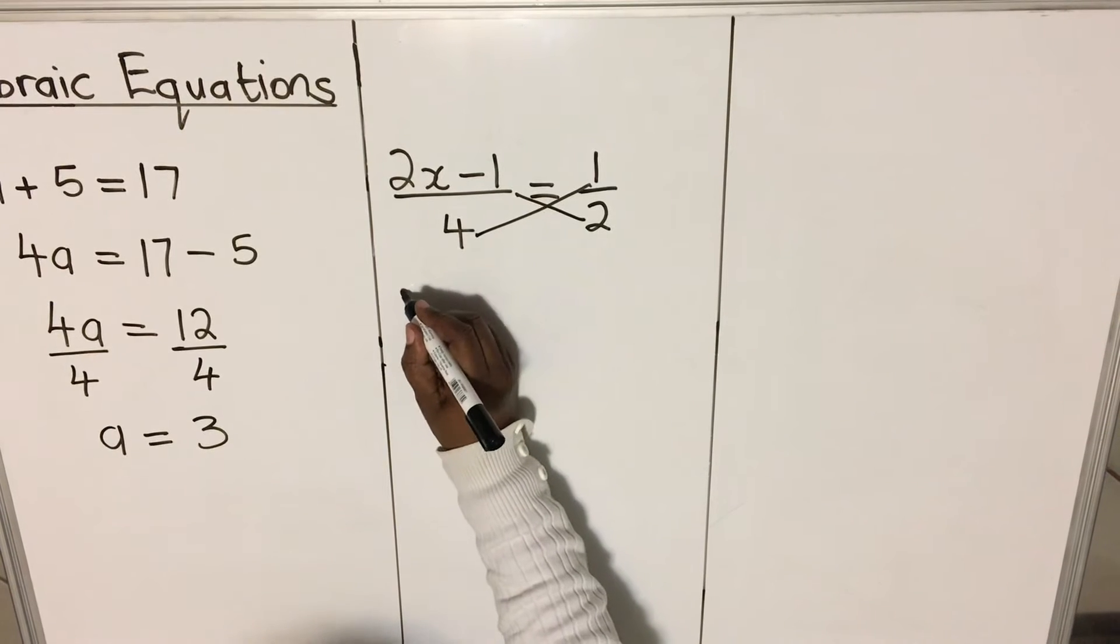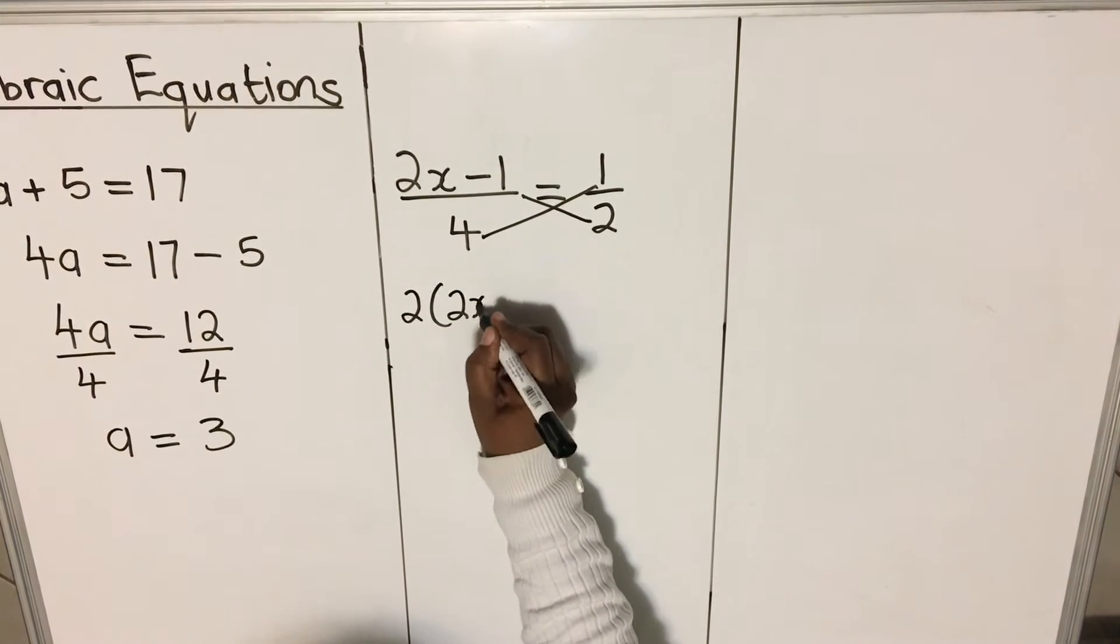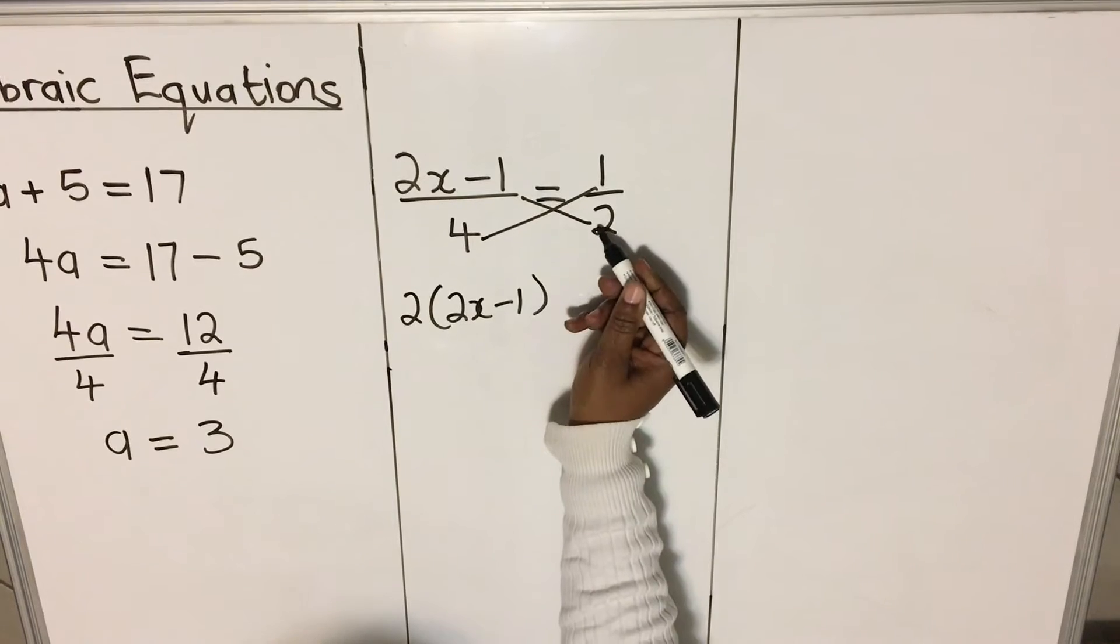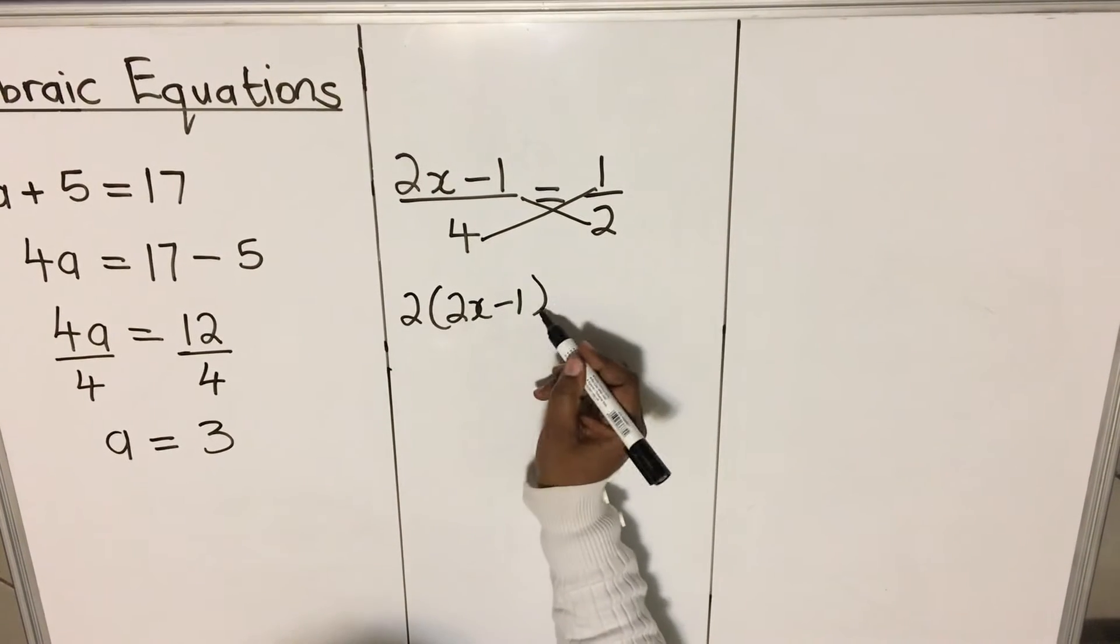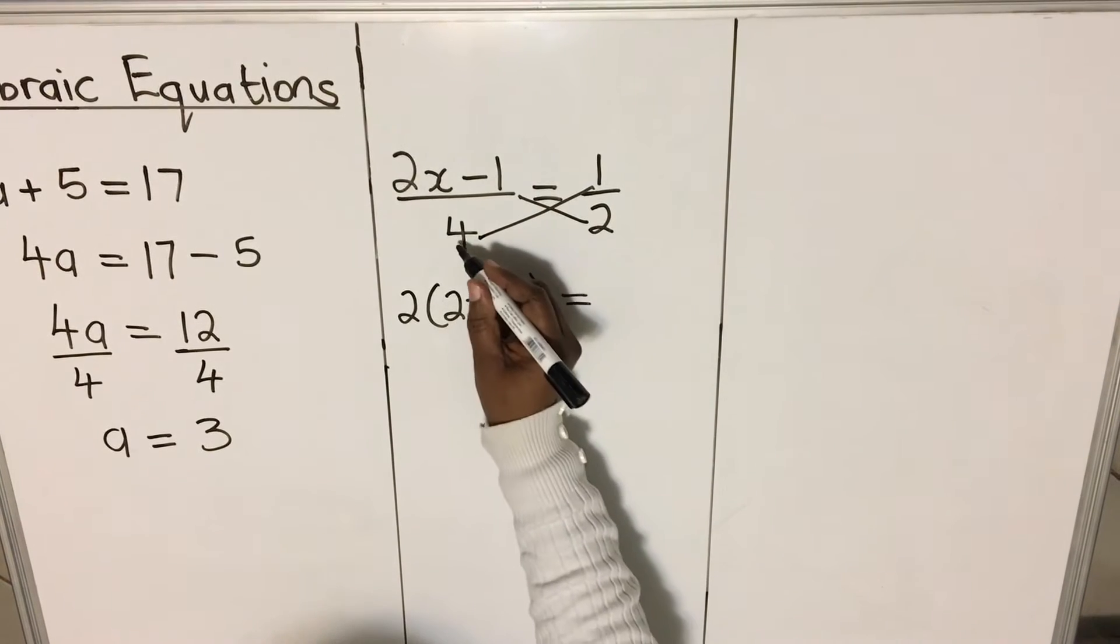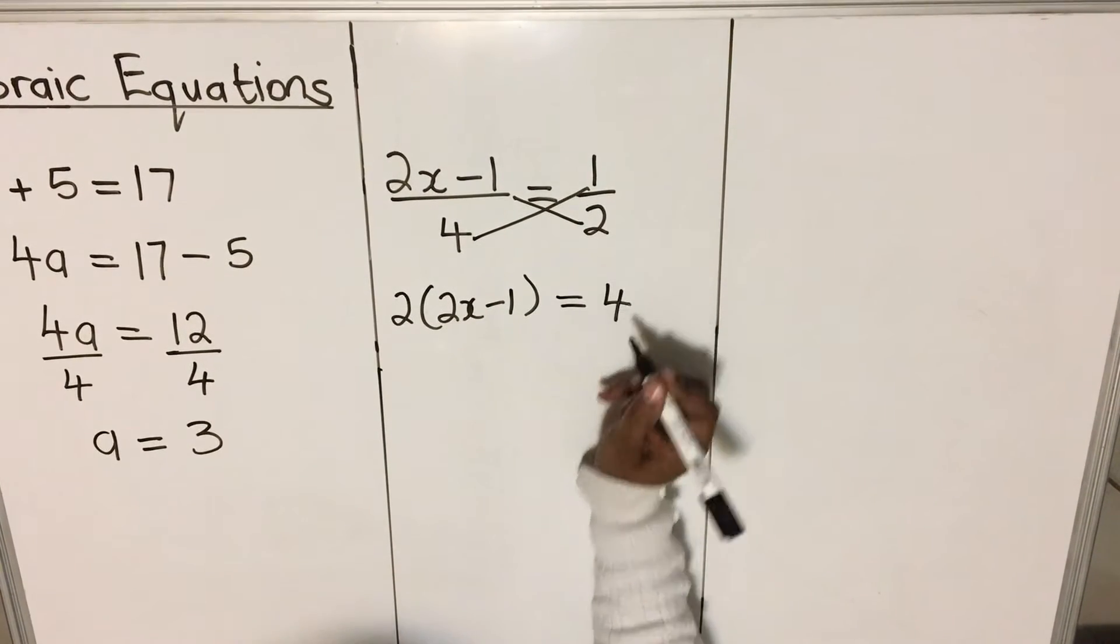So here, we have 2 into 2x minus 1. The 2, you multiply with 2x minus 1. That's why you put a bracket around so that you multiply the whole term. And then here, 4 times 1 will give us 4.